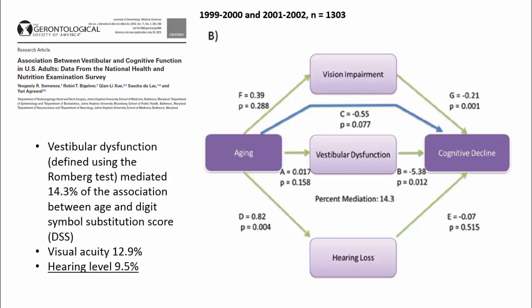Since then, many studies have been done, particularly in relation to ageing. Uri Agrawal and colleagues in Baltimore have done a number of studies looking at the relationship between cognitive decline, ageing, and the vestibular contribution. Based on over 1,300 patients, the Romberg test was used to identify vestibular dysfunction, and it was found that vestibular dysfunction mediated about 14% of the association between ageing and performance on the digit symbol substitution score — controlling for visual and hearing function, with the vestibular contribution exceeding that of hearing or visual loss.